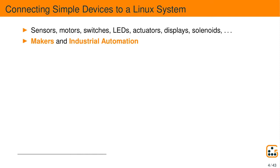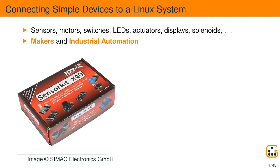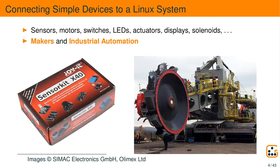In this presentation I will help you understand how to connect simple devices to a Linux system and use them from Linux. Simple devices can be sensors, motors, switches, LEDs, actuators, displays, solenoids. This is important not only for makers who want to make a robot or a 3D printer, but also for industrial automation where you want to control and monitor large machines, including larger machines like an excavator containing a Linux board to monitor operation.